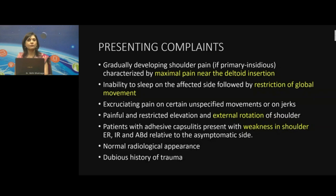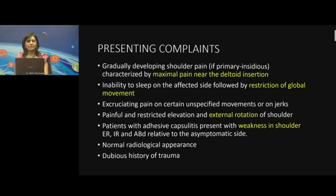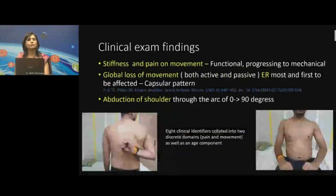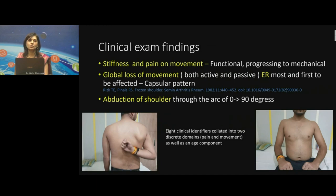A capsular type of restriction means that external rotation is more limited than abduction, and abduction is more limited than internal rotation; internal rotation is minimally or hardly affected in adhesive capsulitis. There is global loss of active and passive range of motion, and pain at the end range of movement is quite classic.